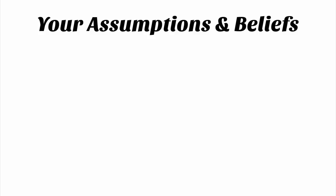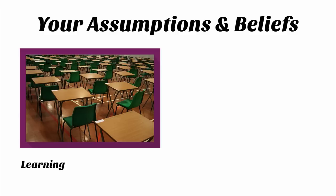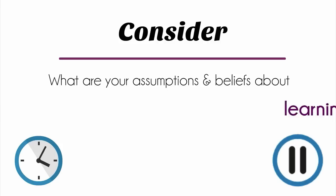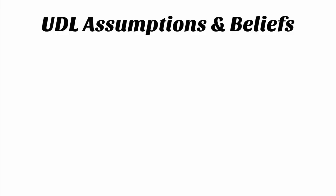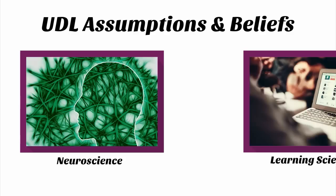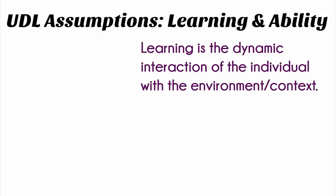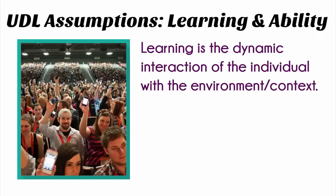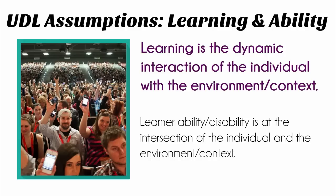I came to teaching with assumptions and beliefs about learning, and also with assumptions and beliefs about my learners. We all do, whether we recognize them or not. Take a moment to think about your own assumptions and beliefs about learning and learners. UDL also brings with it assumptions and beliefs about learning and learners, and these are based on neuroscience and research in the learning sciences. The first is the belief that learning is the dynamic interaction of the individual with the environment or context. Learner ability or perceived disability is at that intersection where the individual interacts with the environment or context.